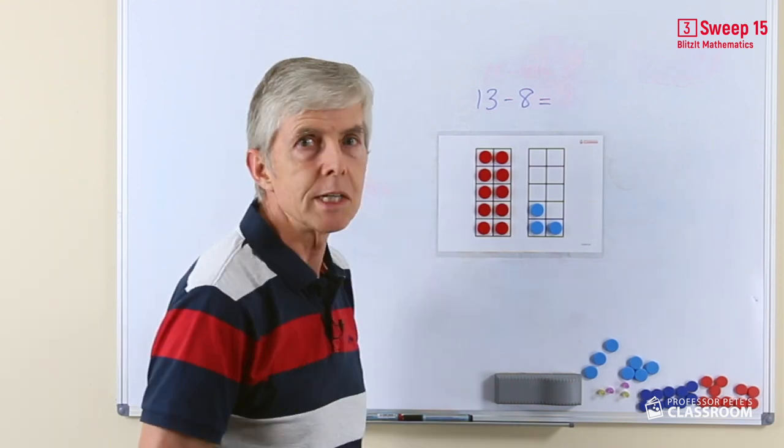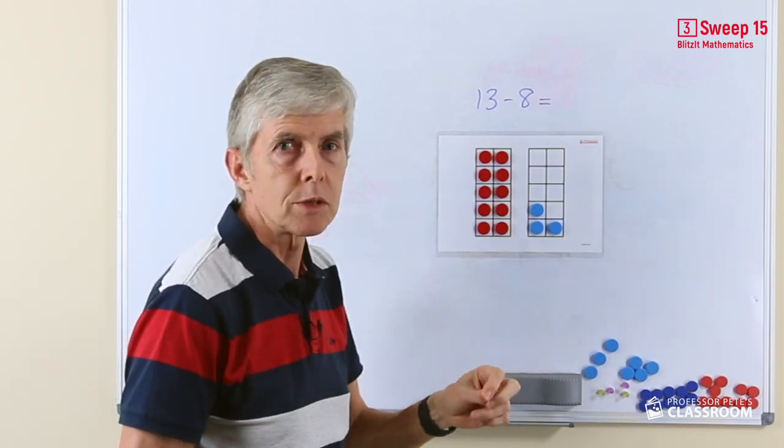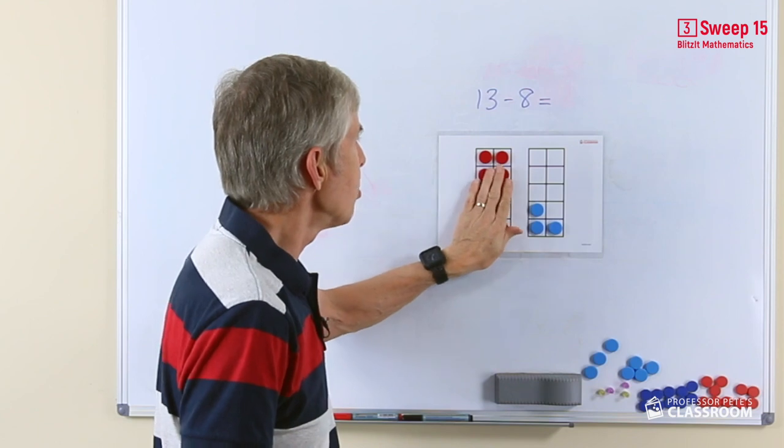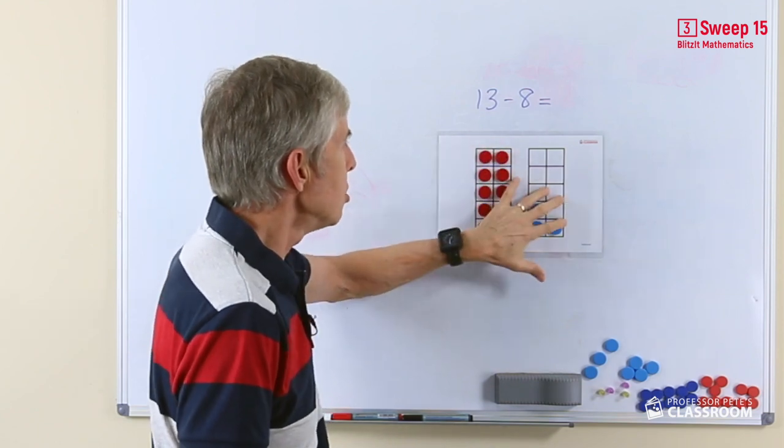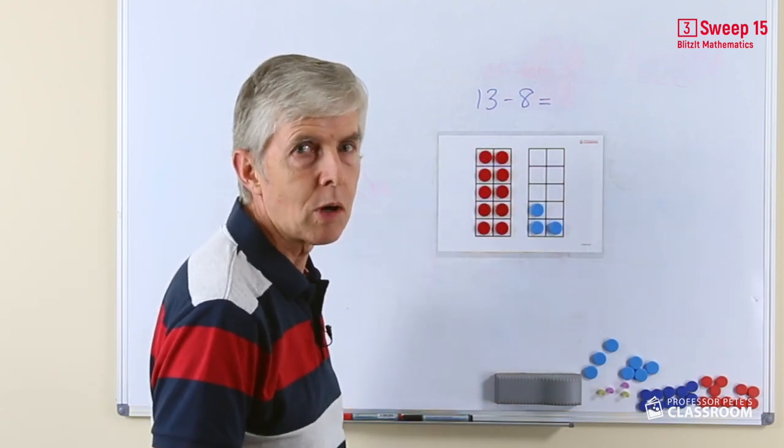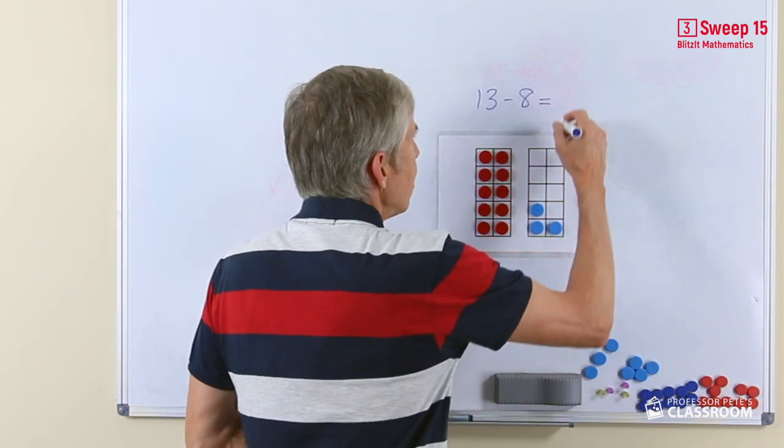But if instead of taking away 10, we took away 8, what difference would that make? Well, if we only take away 8, there'll be 2 left. Those 2 will join the other remaining ones, and of course, we'll have 5 left over.